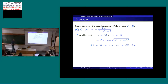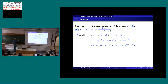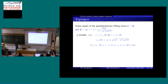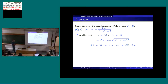It's very easy to see this. We take the scalar square of xi with the metric g. Since xi in Boyer-Lindquist coordinates is the coordinate vector associated to the t coordinate, the scalar square is simply the metric coefficient g_tt. We can read it on the metric element. When xi is time-like, it means this number has to be negative.